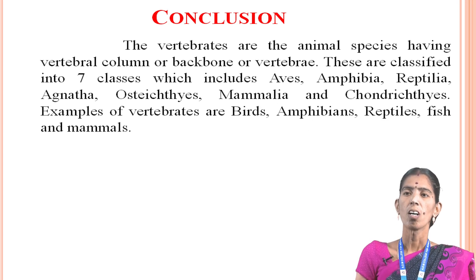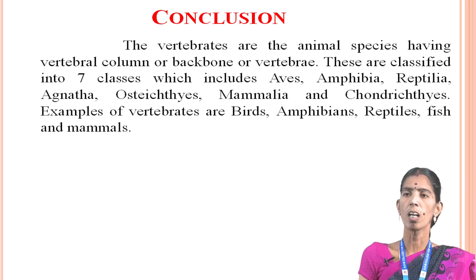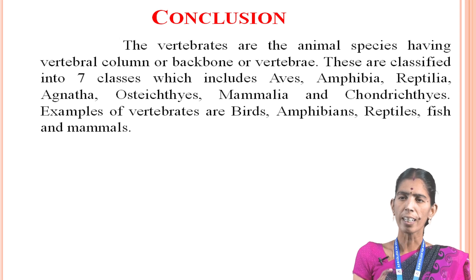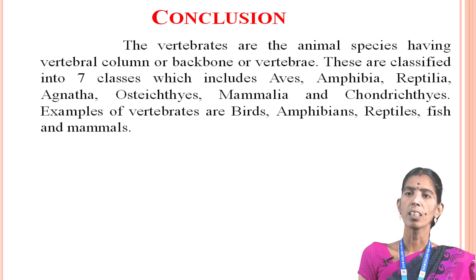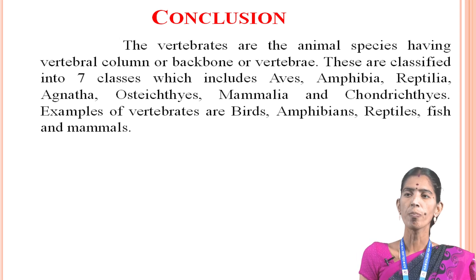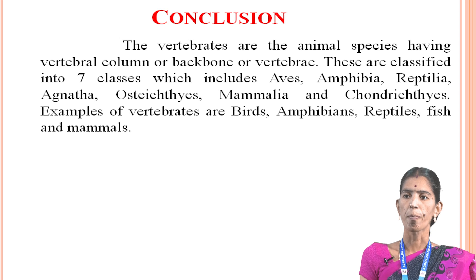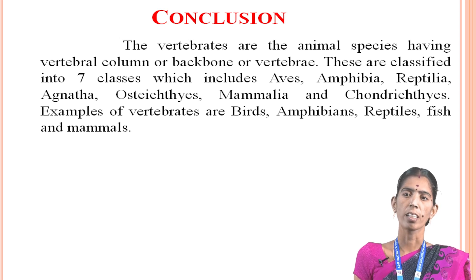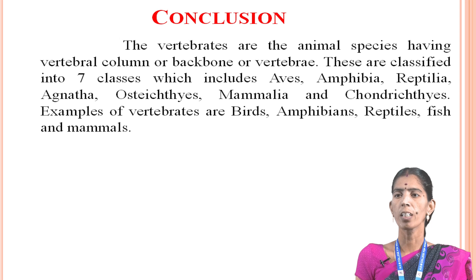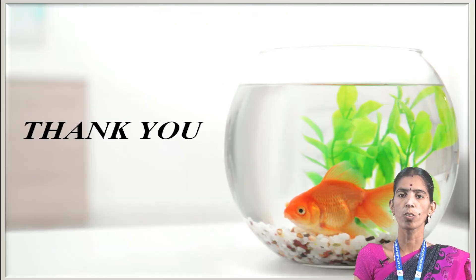In conclusion, vertebrates are the animal species having a vertebral column, backbone or vertebrae. These are classified into seven classes which include Aves, Amphibia, Reptilia, Mammals and others. Examples of vertebrates are birds, amphibians, reptiles and fish. Thank you so much.